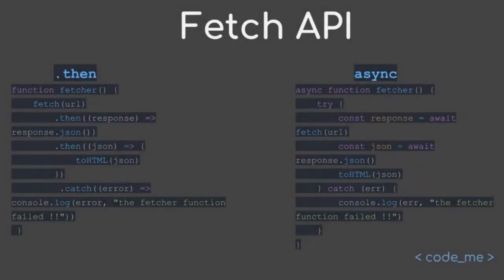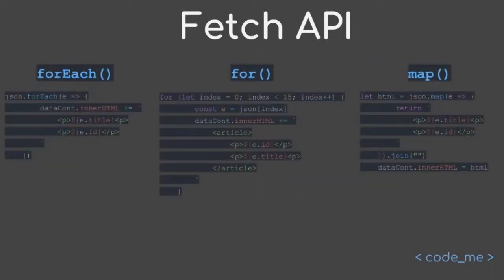Today I wanted to talk about the fetch API and how we can use it to bring data from a server to our web app or website, and also how we can use the dot-then syntax and async/await — and what the difference between these two are. We'll also look at some loops commonly used with the fetch API: forEach, for loop, and map. If you're a beginner you're more than welcome to follow along, otherwise just sit back and enjoy.